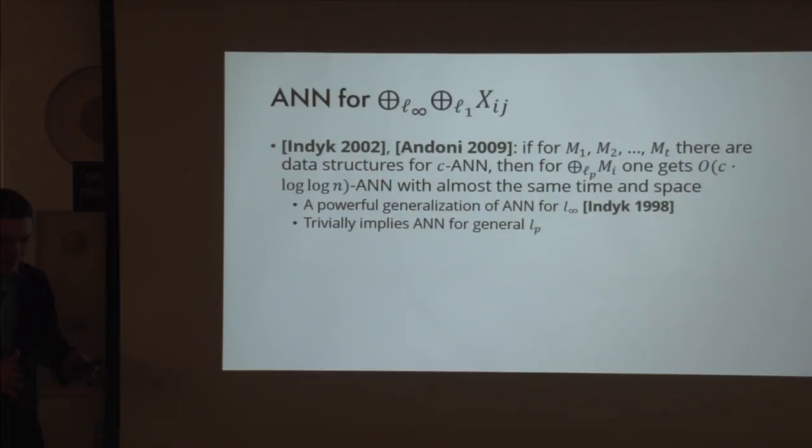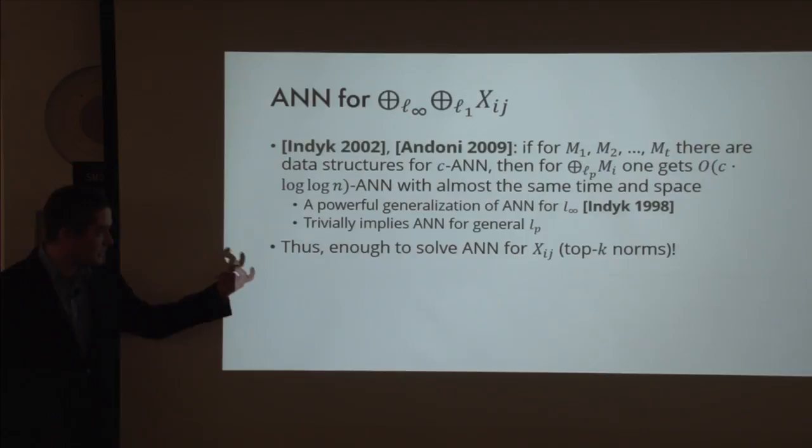We need to understand this space and we have this tool. So it's enough to understand how to solve approximate nearest neighbors for top-K norms—the innermost spaces.